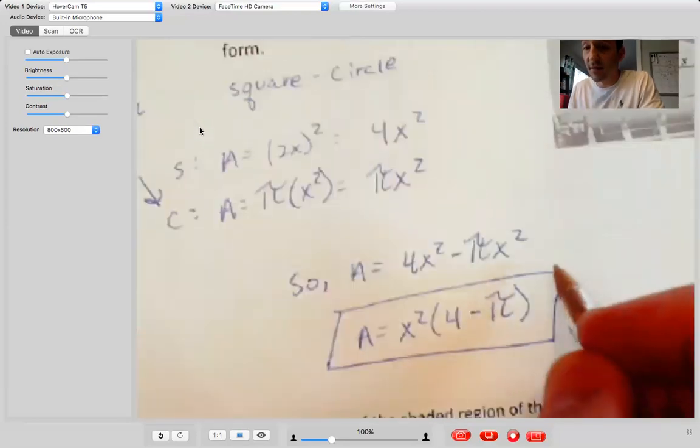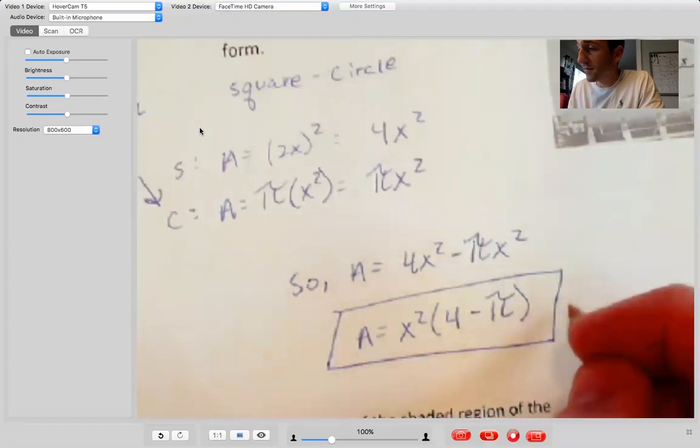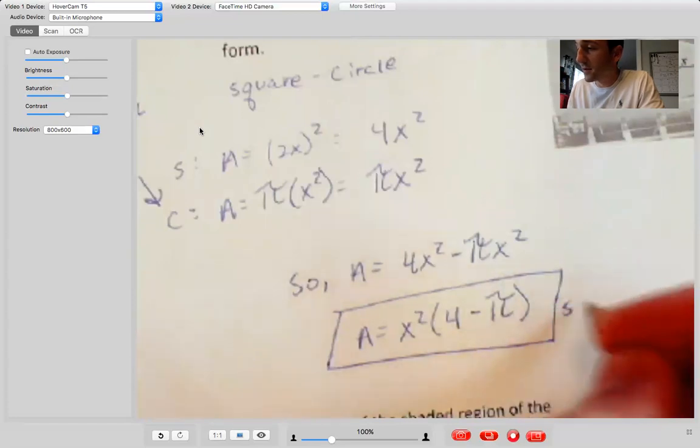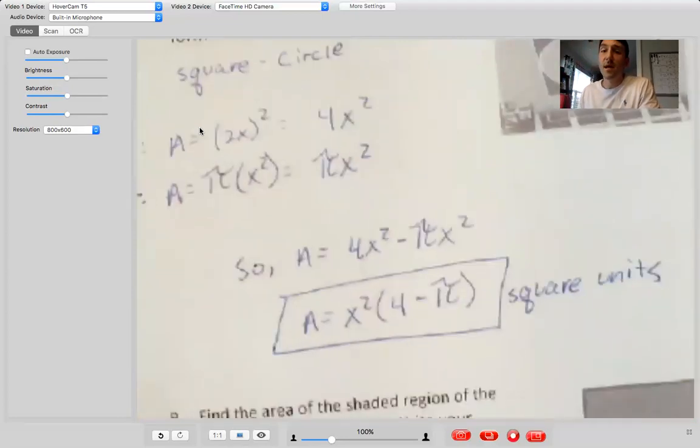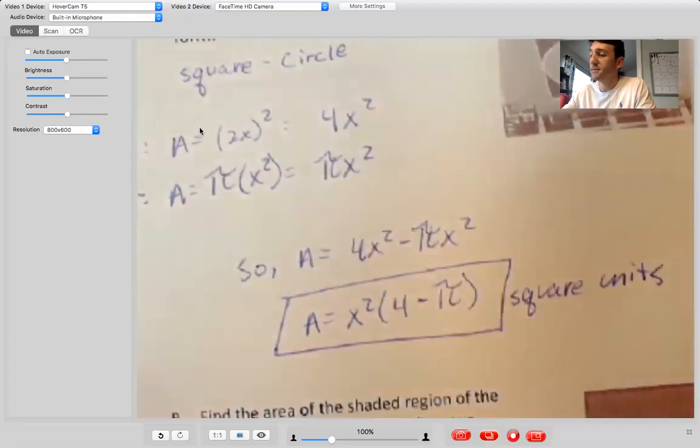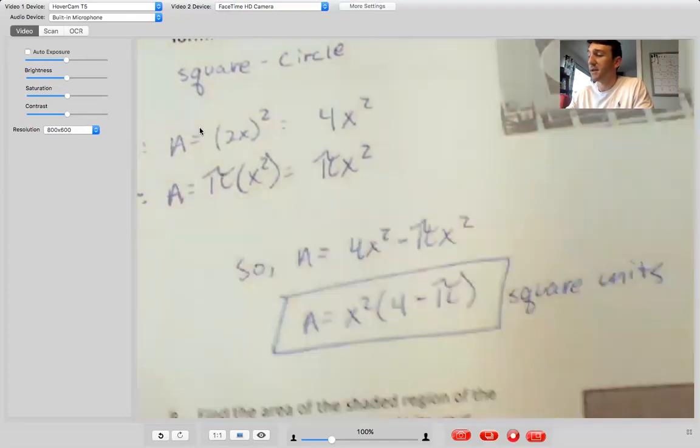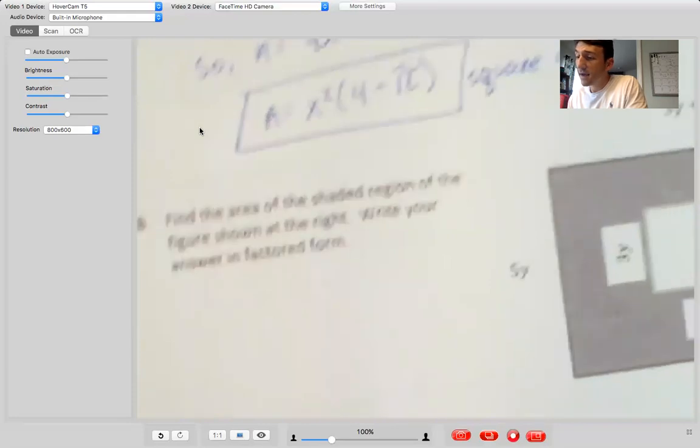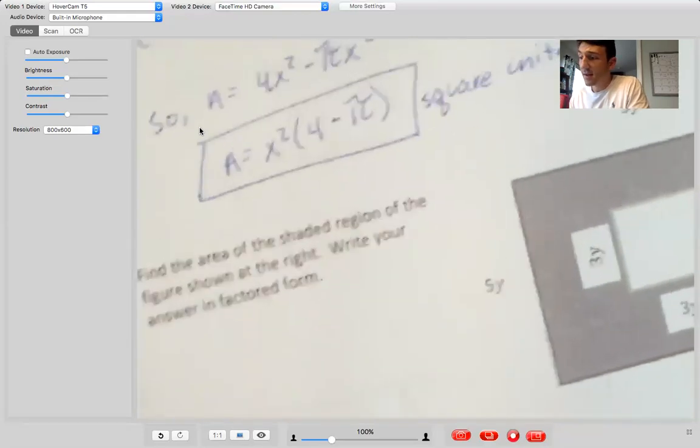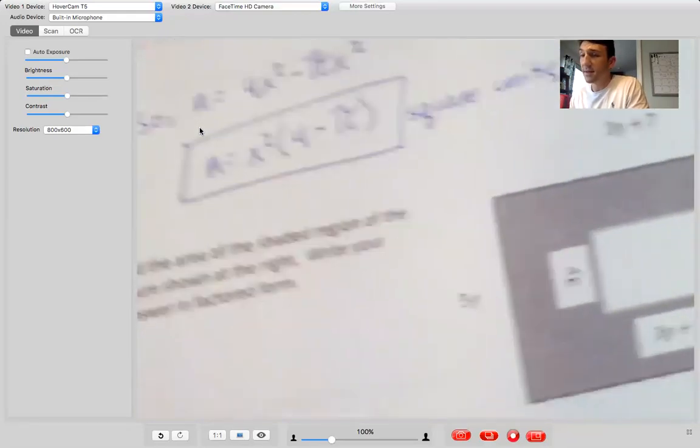All right. And then, you know, I don't know if you'll need to here. Usually it's done for you on math Excel, but sometimes they want you to put something like square units since it's area. All right. But the big thing is that you get to the X squared times the quantity four minus pi. All right. And then our last example, again, find the shaded region. So in this case we want to do, sorry, I can't put all that on there.